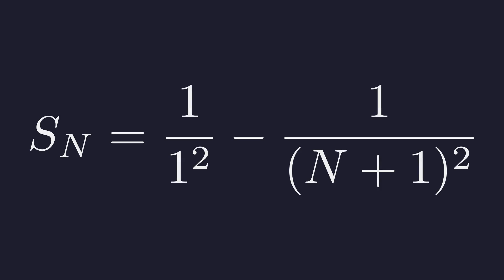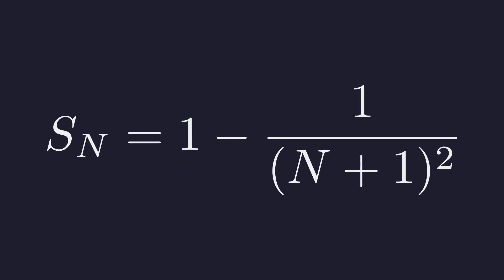The only terms that survive are the very first term, 1/1², and the very last term, −1/(n+1)². Everything else just cancels. The first term, 1 divided by 1², is simply 1. This simplifies our expression for the partial sum.